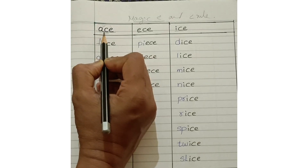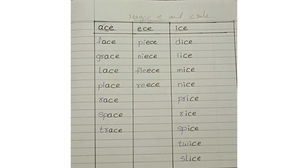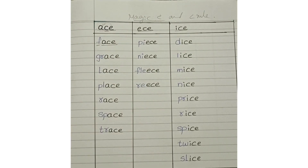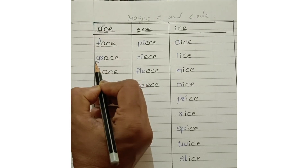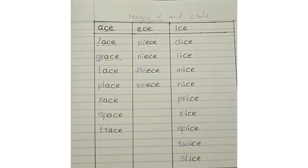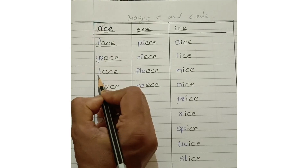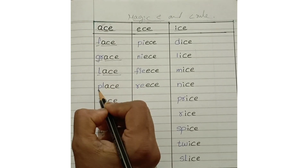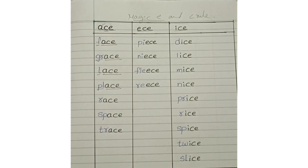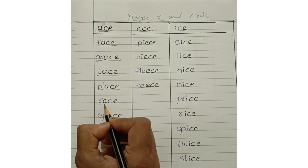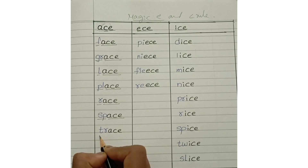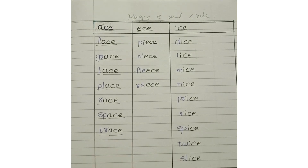ACE makes the sound 'ace'. Face, grace. L + ACE: lace. PL + ACE: place. R + ACE: race. SP + ACE: space. TR + ACE: trace.